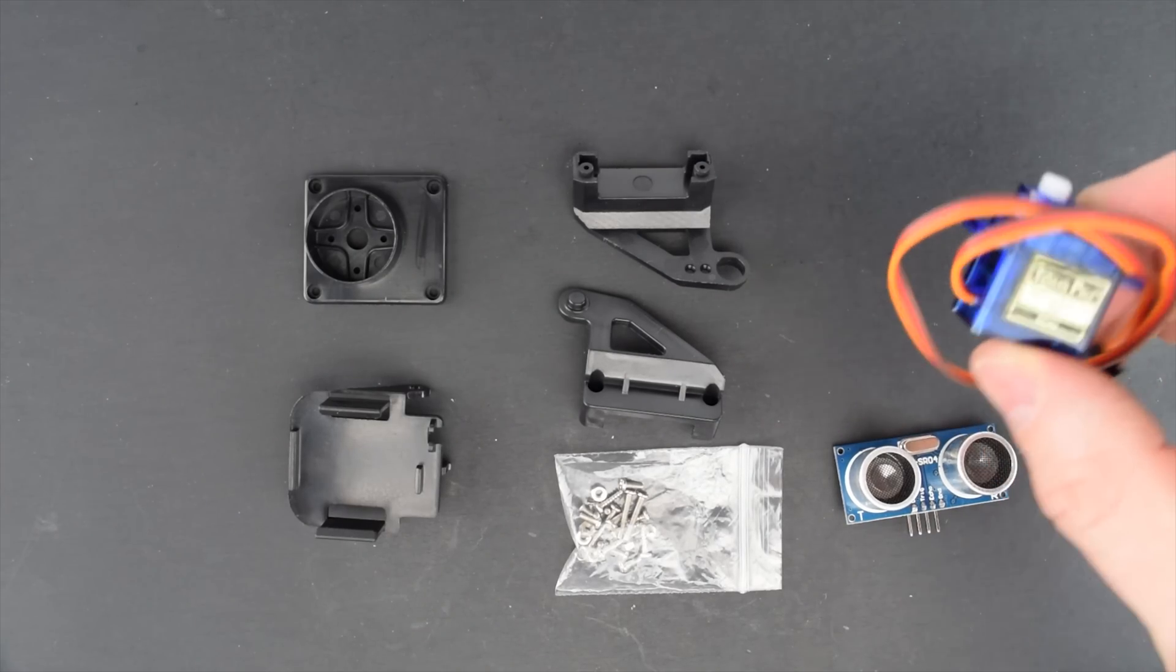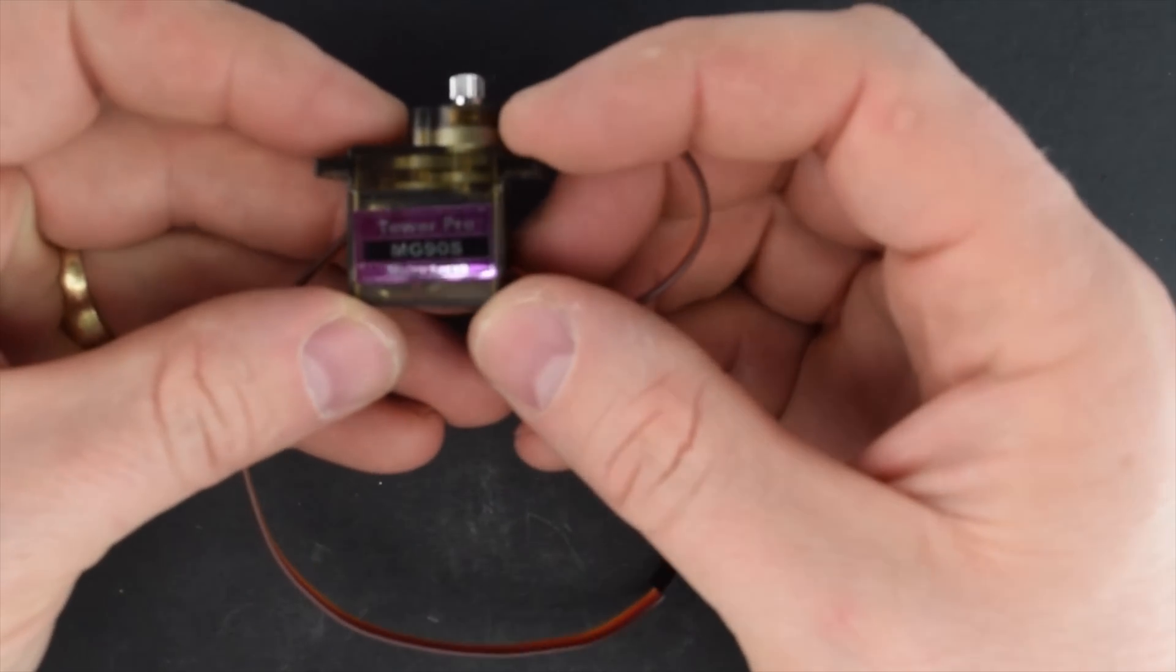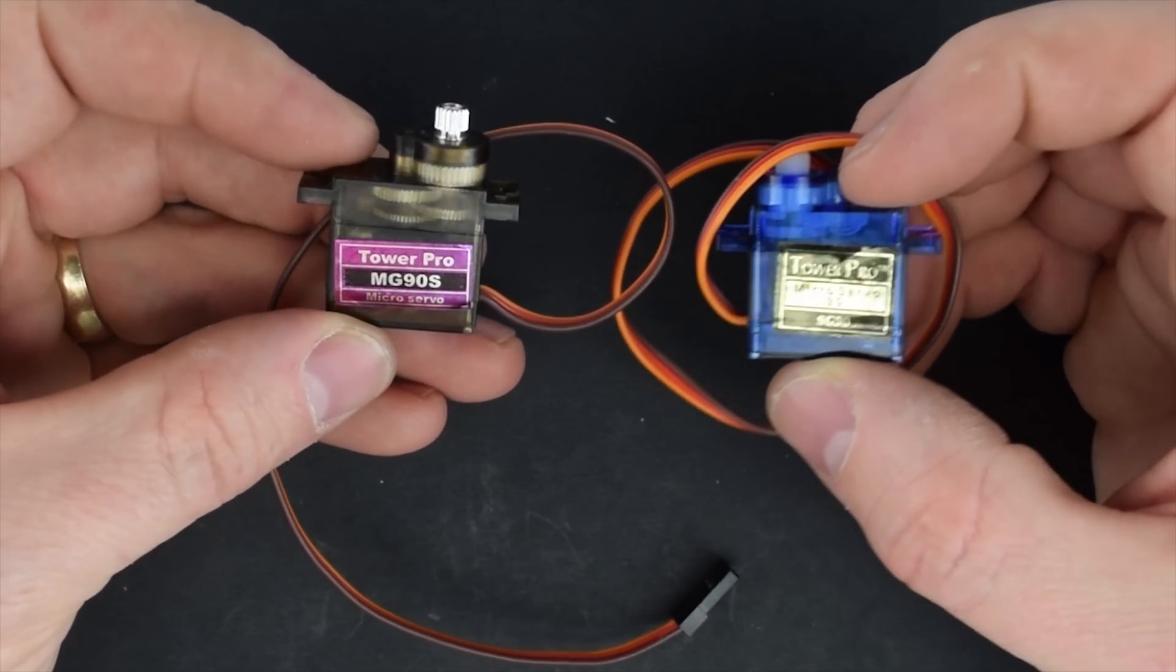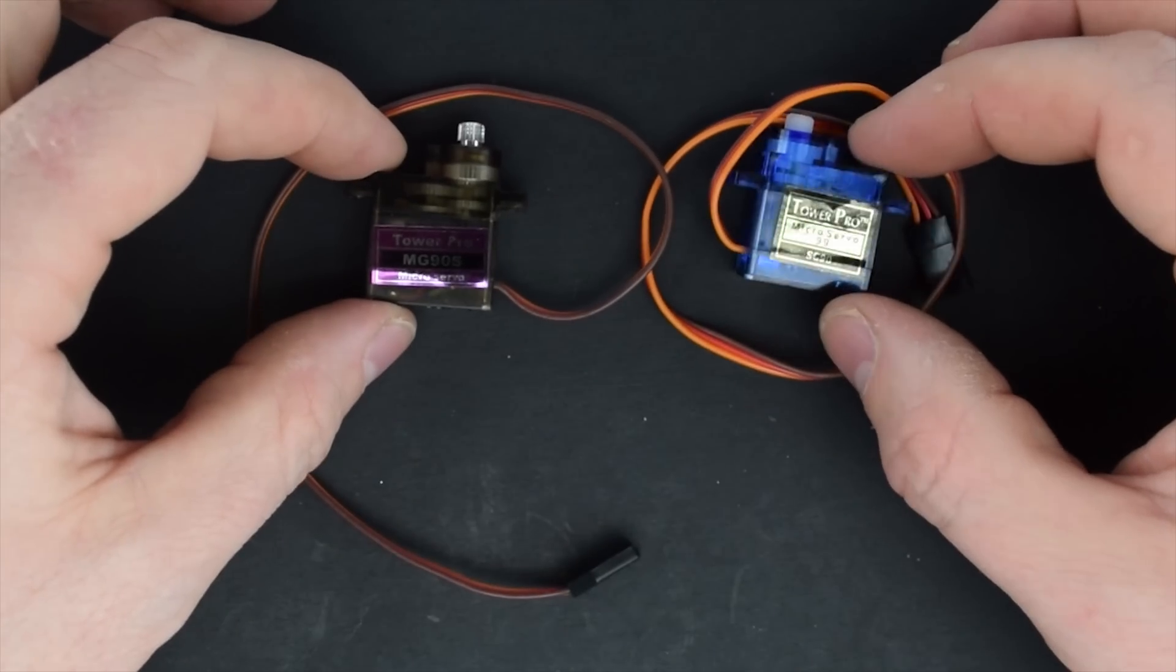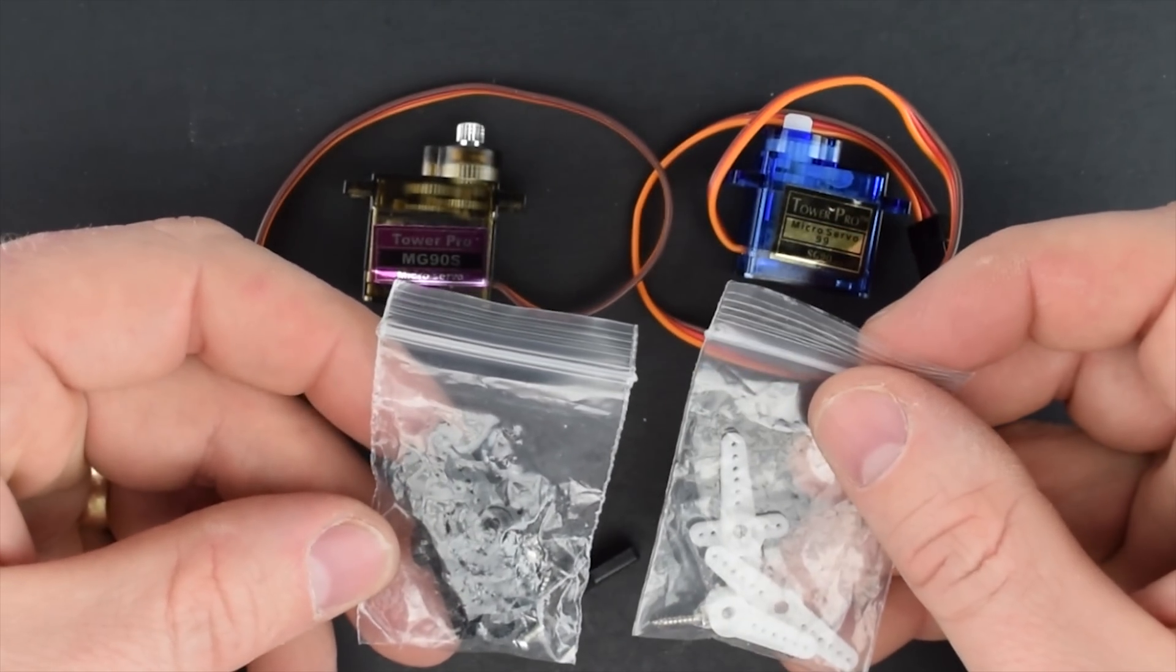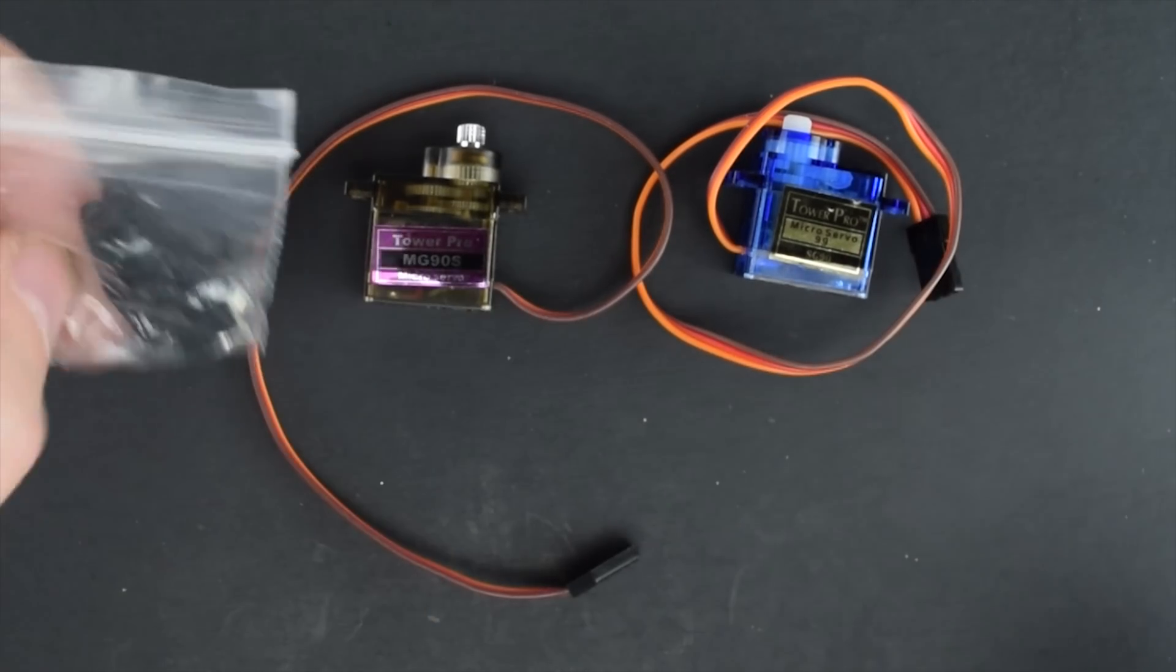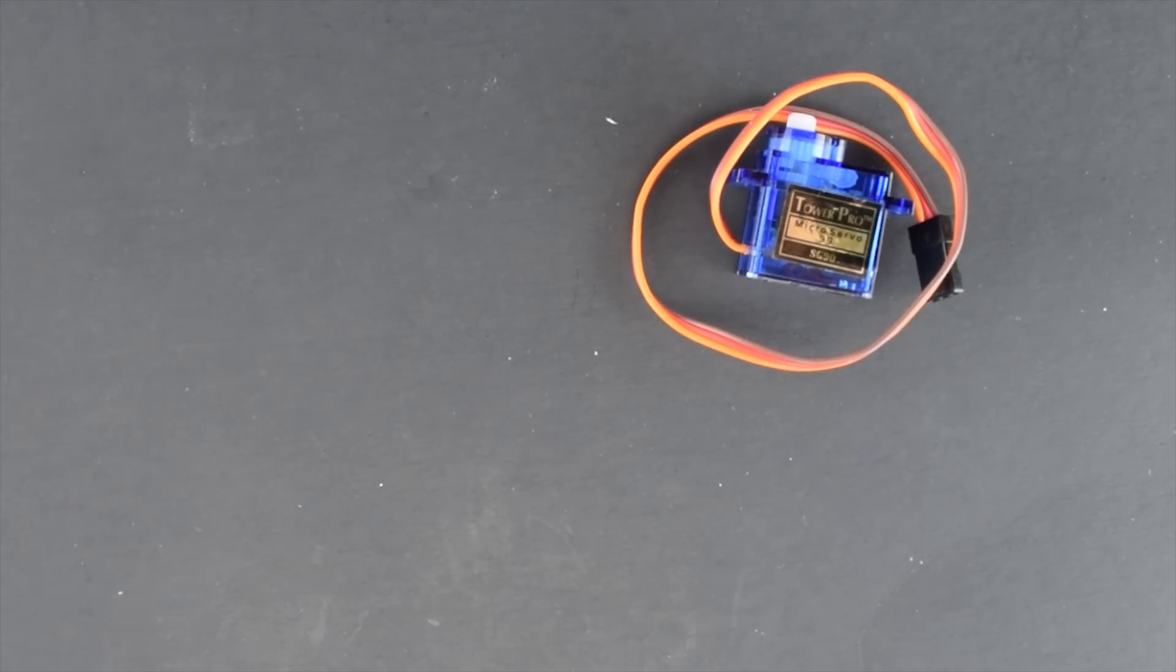You're not limited to using just these 9G micro servos. There's a few other options, like this MG90S. It's got a metal gearbox inside, and it's going to be a little bit more stout, and the gears won't strip quite as easily. In the gear mountings that you're going to find in the MG90S, you're going to see black plastic that's a little bit thicker. The whole pattern's going to be slightly different, but they can be used interchangeably.